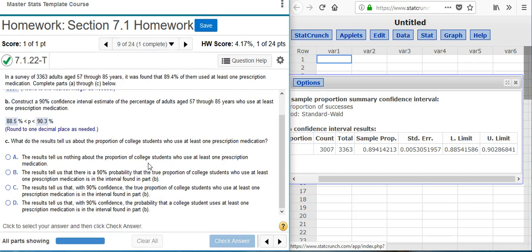Now Part C asks what do the results tell us about the proportion of college students who use at least one prescription medication. We'll go back and look at the actual data that we have collected. We have adults aged 57 through 85 years, but the question is asking us about college students. So how representative of that population is our sample? In other words, how many college students are we going to find in a sample of people aged 57 through 85 years?